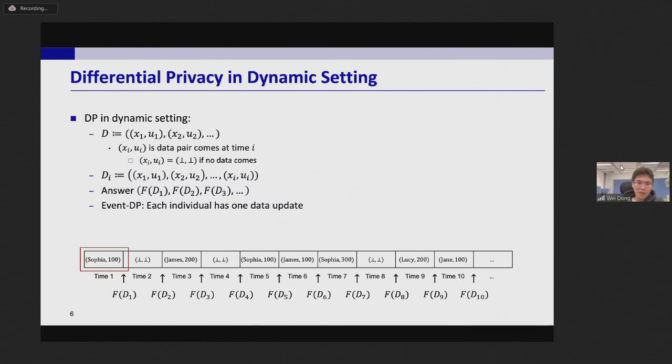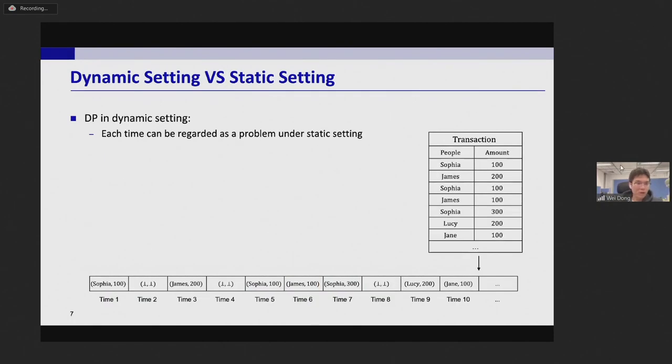And in the dynamic settings there are also two DP models. The first one is event-DP. Here each individual corresponds to one data update and we protect the privacy of data updates. And the second one is user-DP where each user can correspond to an arbitrary number of data updates and we protect the privacy of users.